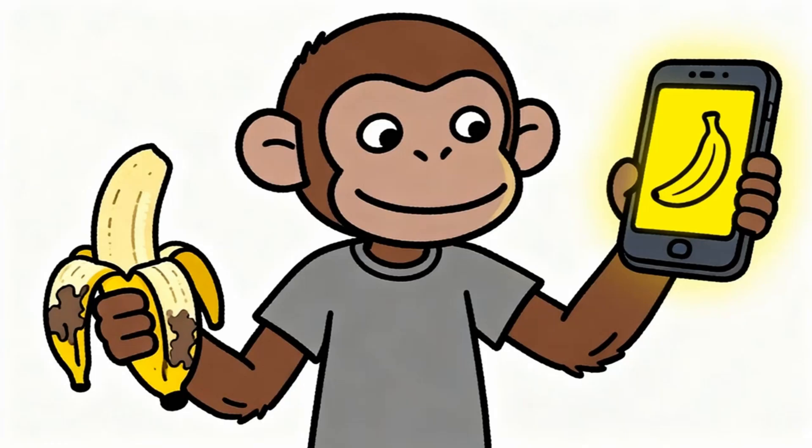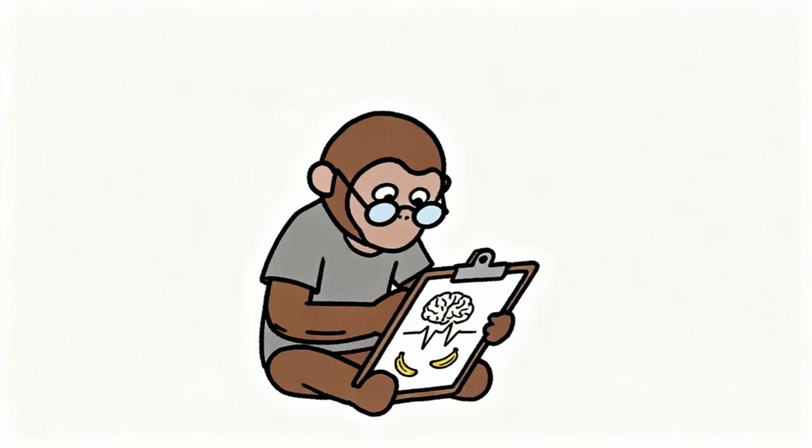The dopamine trap works by hijacking the same brain pathways that helped monkey survive for millions of years. Your brain cannot tell the difference between earning a banana through hard work and getting a notification on your phone. Both trigger dopamine release. Both make you want to repeat the behavior. But one builds strength and character, while the other creates dependency and emptiness.